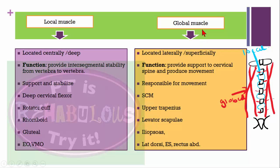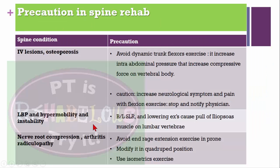The second type is global muscles. Global muscles are located laterally or superficially. Their main function is to provide support for the cervical spine and produce movement. These muscles are specifically located laterally and will produce muscular movement. For example: sternocleidomastoid, upper trapezius, levator scapulae, iliopsoas, latissimus dorsi, rector spinae, and rectus abdominis — these are all global muscles.